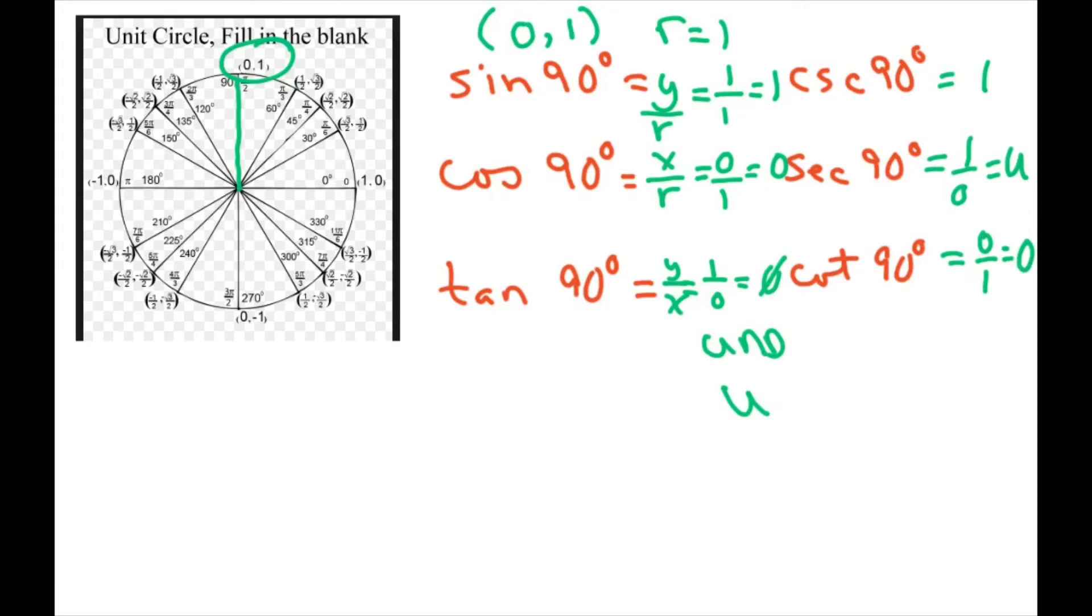So if you notice, when you flip 0, these should be opposite. So if you have 0 for cosine, then the cofunction secant is going to be undefined. They flip around.